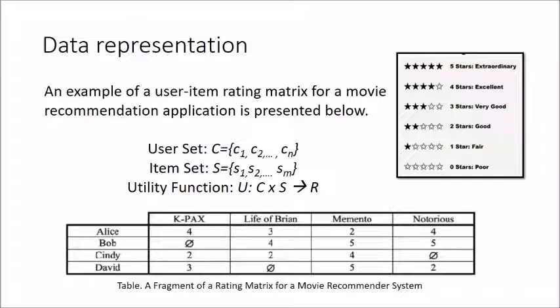How is the data represented behind the recommendation systems? You might have seen when you buy some item from an online website like Amazon, they will ask you about your feedback. They will ask to what extent do you like this particular product. If you give one star it means this is a fair product, and if you give five stars it means it is extraordinary.